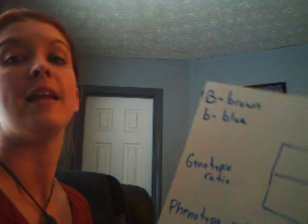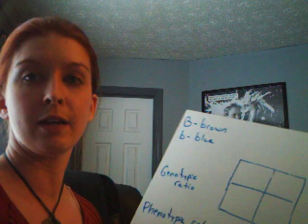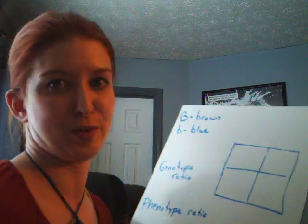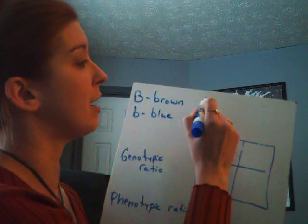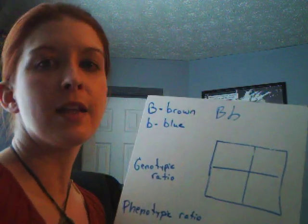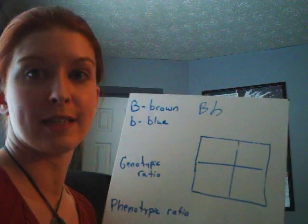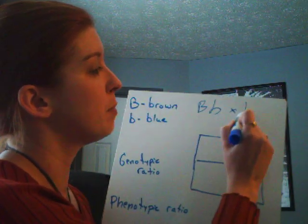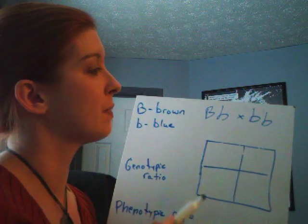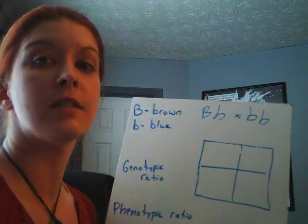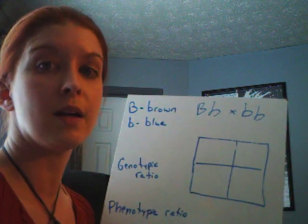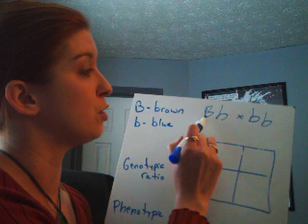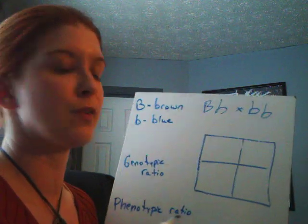Here's our first one. Now let's try the same thing — eye color — but with a heterozygous individual. Remember, hetero means different, so a heterozygous individual is going to have big B, little b. Let's cross that with a homozygous recessive, which is going to be little b, little b. Even though the heterozygous individual has one of each, it's going to be brown eyes because there's a dominant allele present. So brown eyes and blue eyes again — let's see what we get for our babies this time.